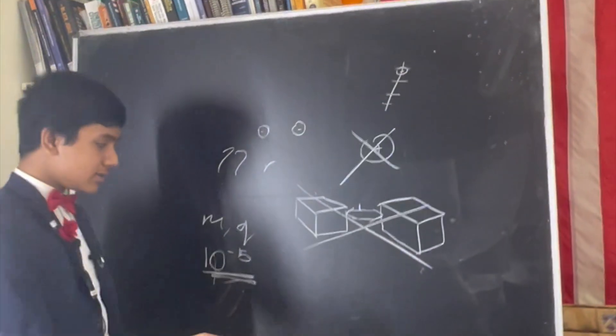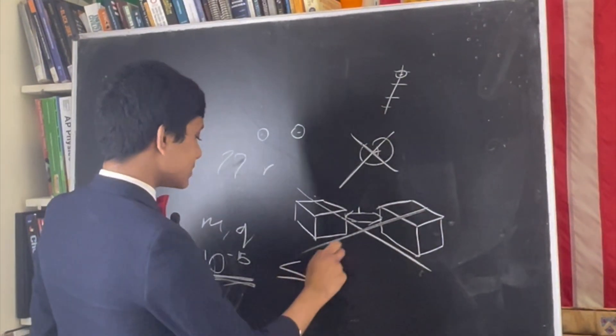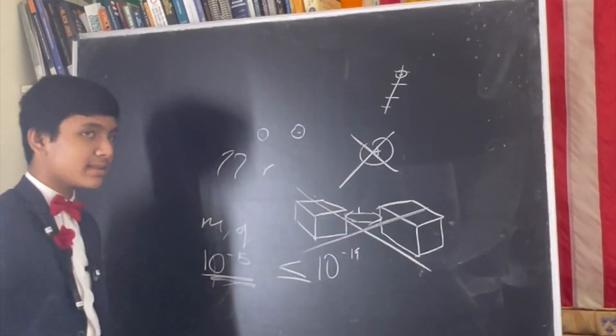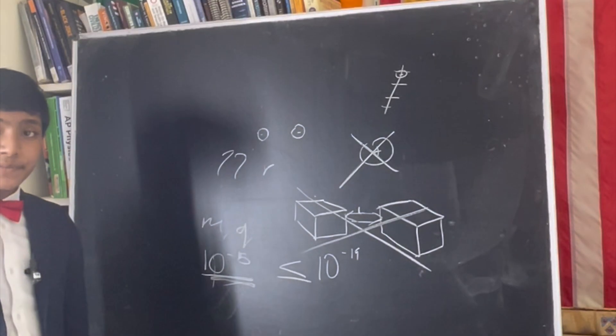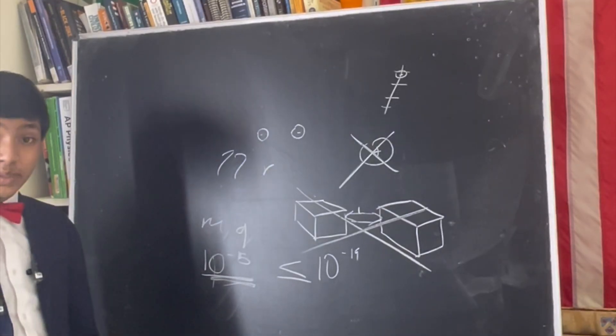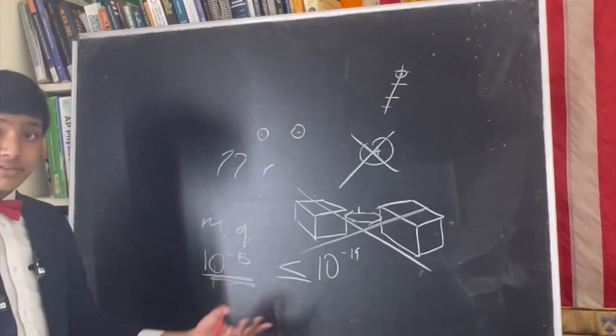We even made sure that it was, the radius was at least less than or equal to 10 to the minus 19, over 10,000 times smaller, which means an electron might just be a real point particle that might not even have a radius.